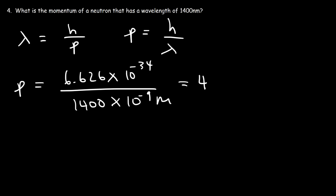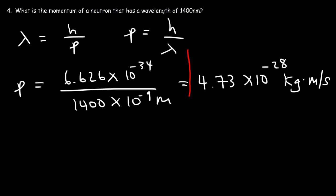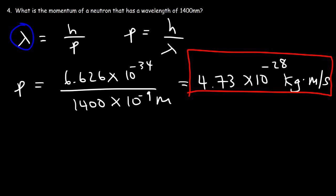The momentum of this neutron is 4.73 times 10 to the negative 28 kilograms times meters per second. That's how you can calculate the momentum of a particle when you're given its wavelength.